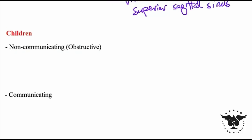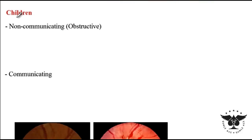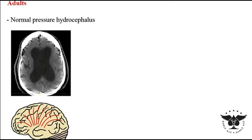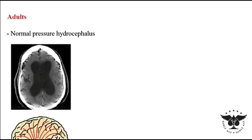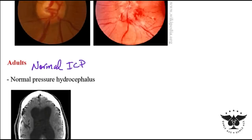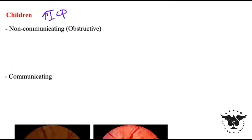The first two forms of hydrocephalus — non-communicating and communicating — are more common in children and are associated with elevated intracranial pressure. The other two forms, hydrocephalus ex vacuo and normal pressure hydrocephalus, are more common in adults and have a normal intracranial pressure.